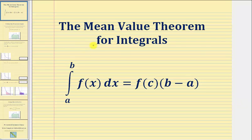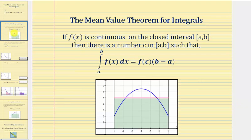Welcome to a lesson on the mean value theorem for integrals. The mean value theorem for integrals states that if f of x is continuous on the closed interval from a to b, then there is a number c, which is an x value, in the closed interval from a to b, such that the integral of f of x from a to b equals f of c times the quantity b minus a.